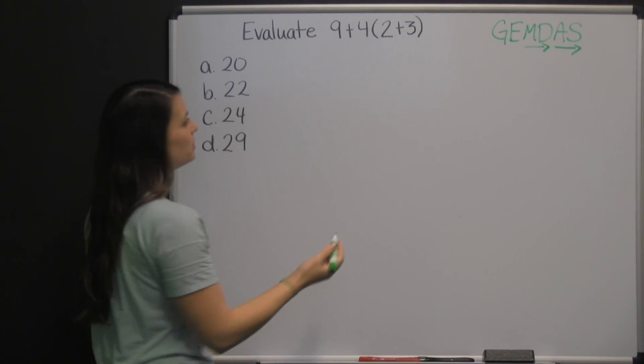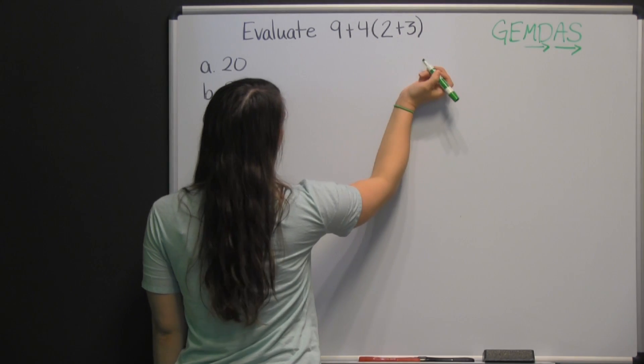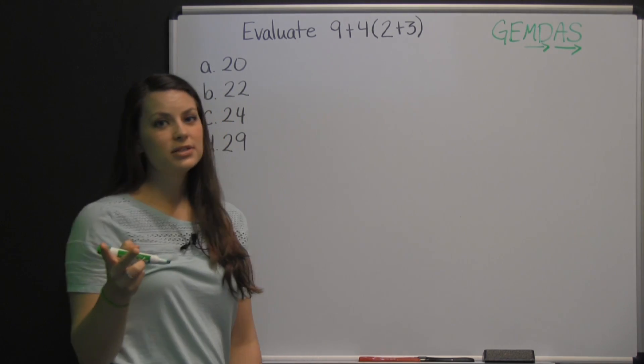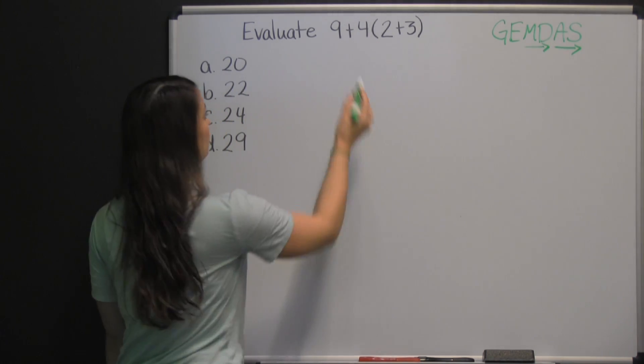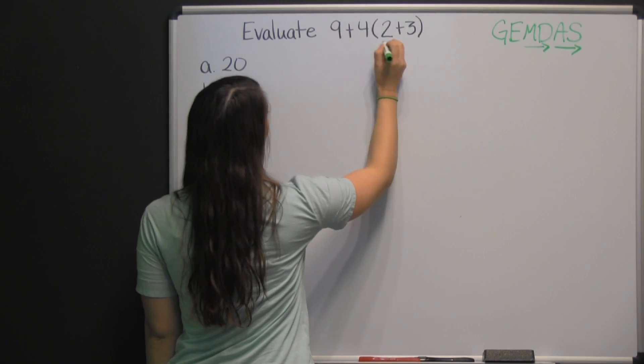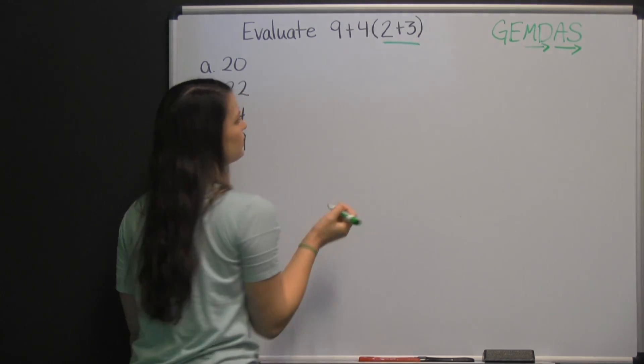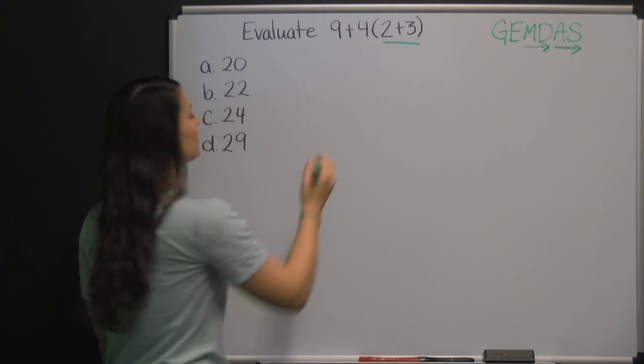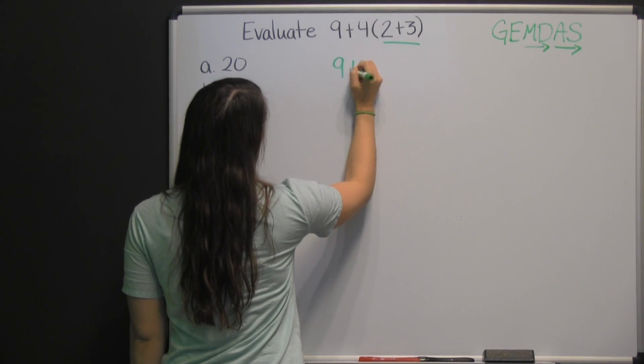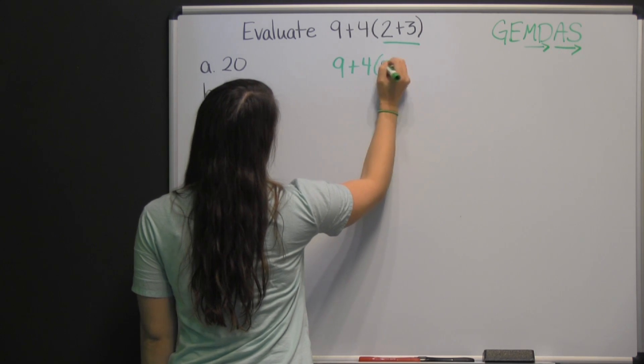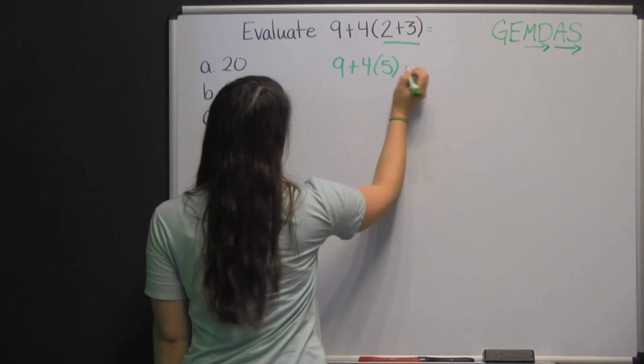So on this problem, we'd start right here with our grouping symbols. You have two options. You could distribute the 4 or you can just add the 2 plus 3, and I'm going to do it that way. So then we have 9 plus 4 times 5, since that's what 2 plus 3 is.